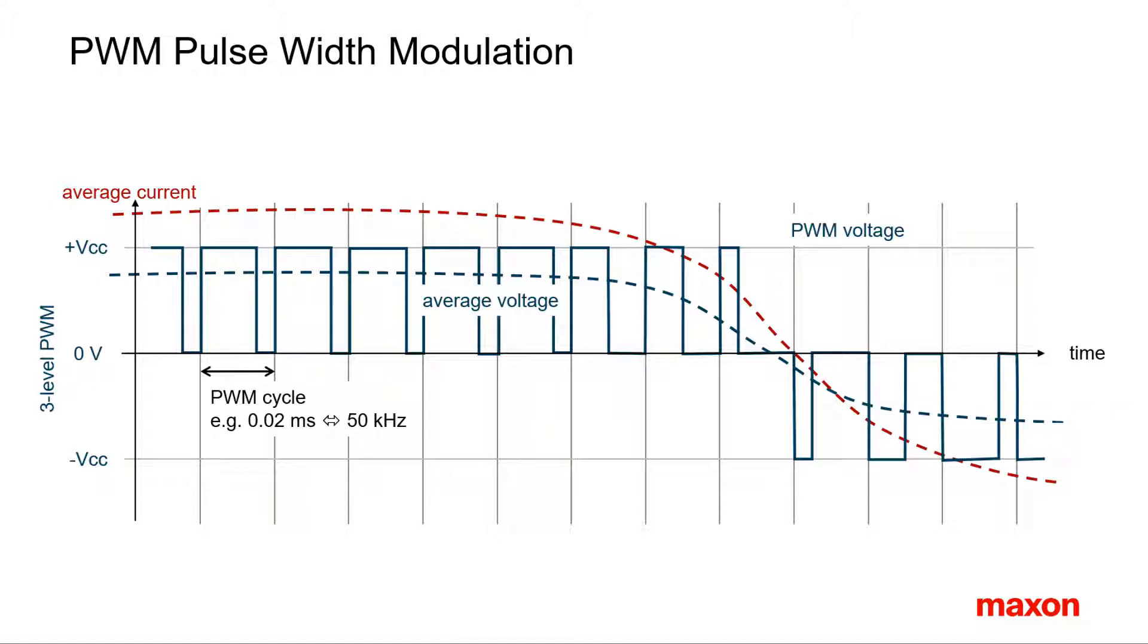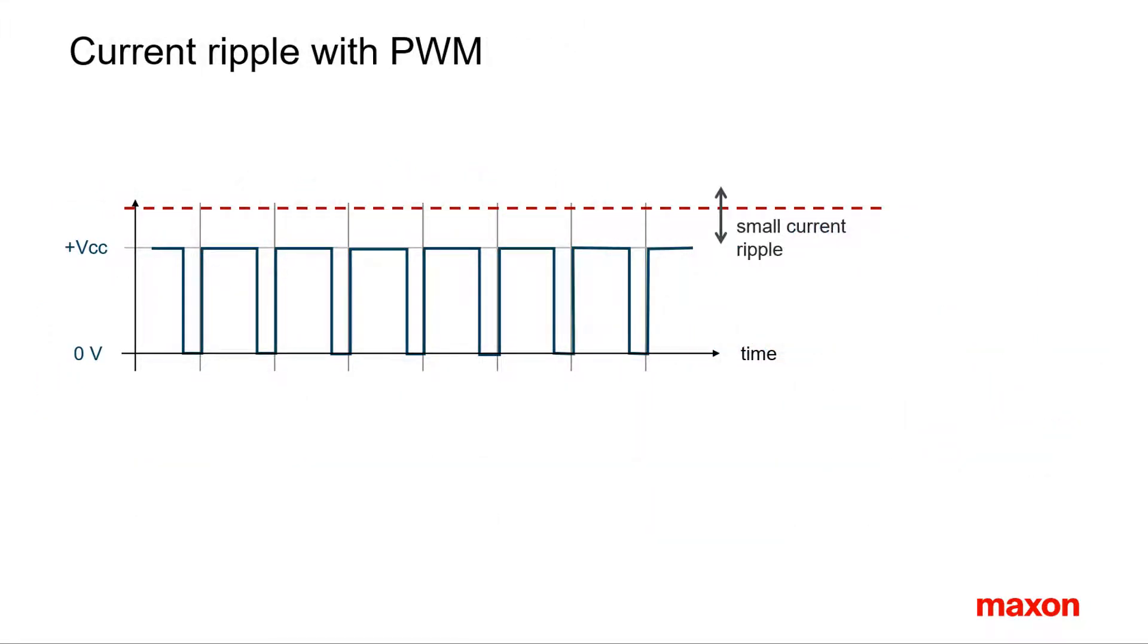Motor currents, however, react much faster, the electrical time constant being often well below one millisecond. The current is not just a smooth curve, it tries to follow the switched voltage. Therefore, a more appropriate picture of the current flow exhibits a current ripple. Let us consider a steady-state average voltage situation. Due to the fast electrical time constant, the current will rise and fall within each PWM cycle. It's a current ripple.